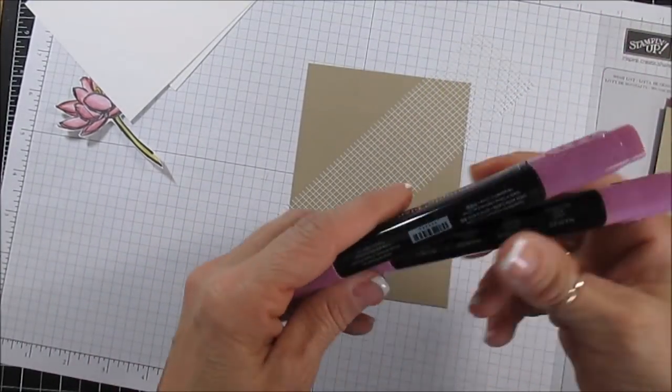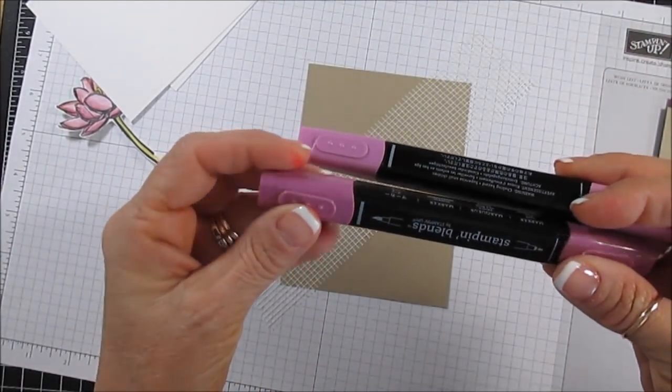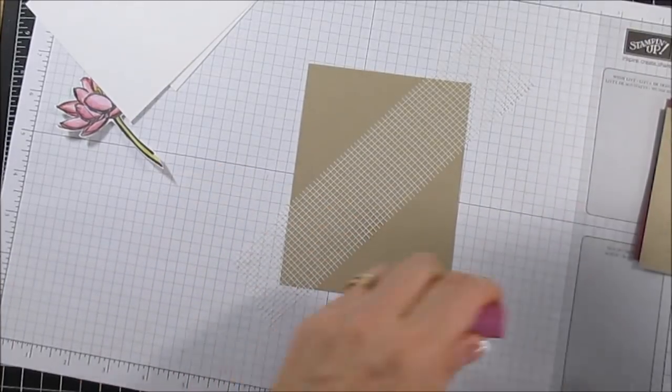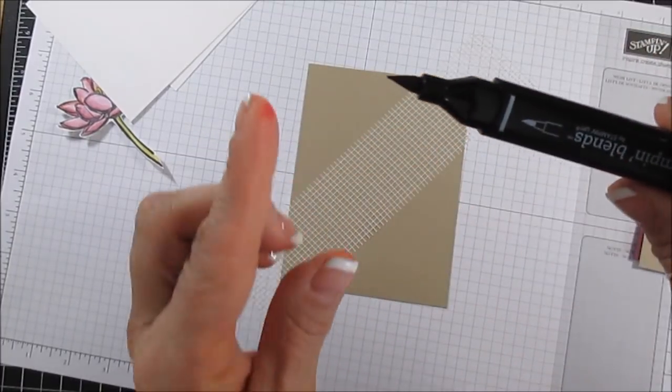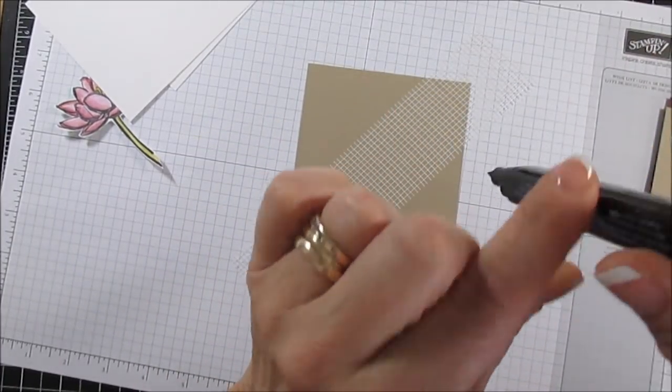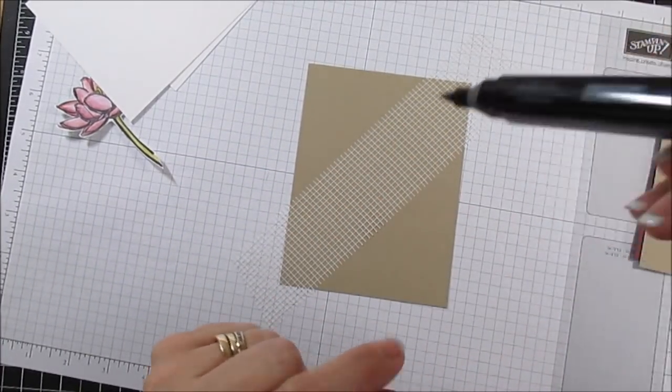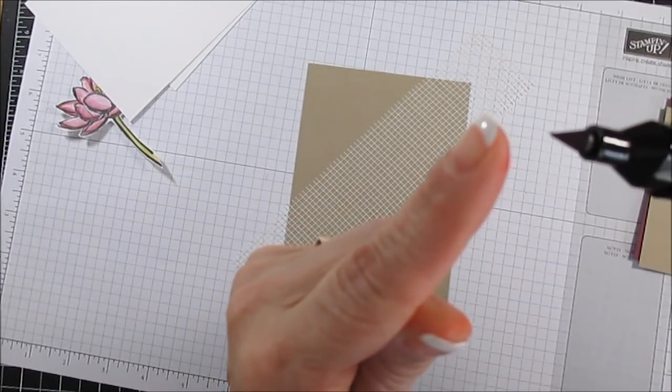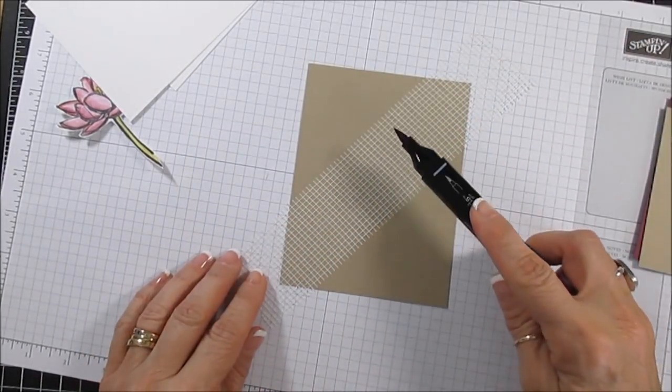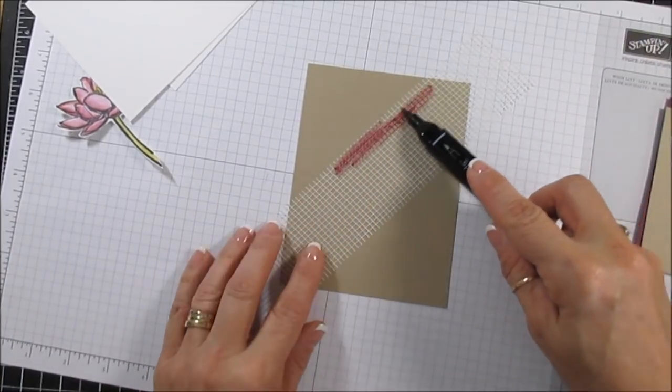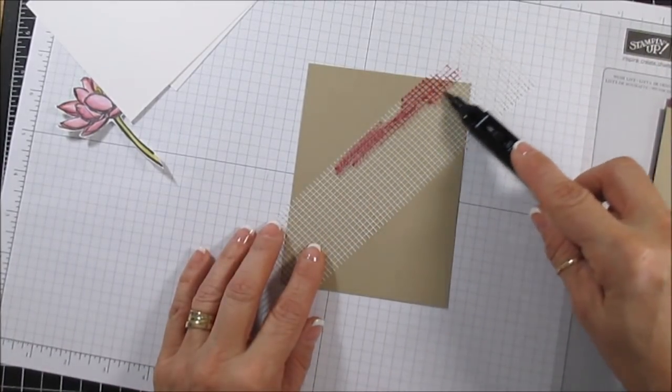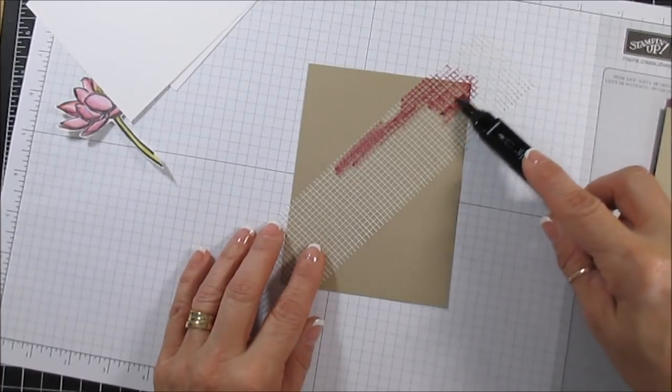Now I'm using the Rich Razzleberry and I'm going to use the dark one. I'm using the brush tip. You want to use the brush tip, but you don't want to go down because if you go like this, it's really going to ruin your tip. So I'm going to go sideways and really in the center.